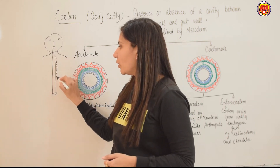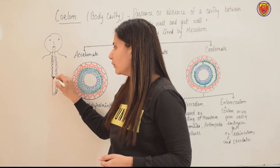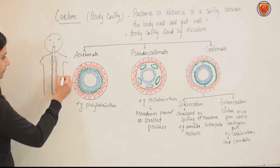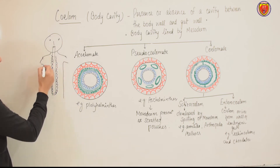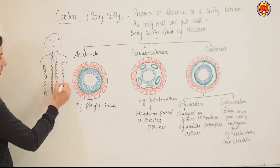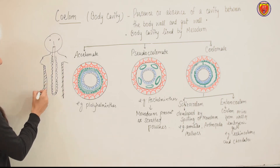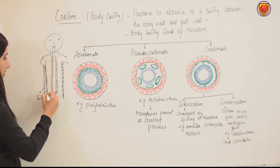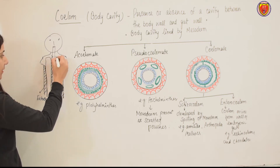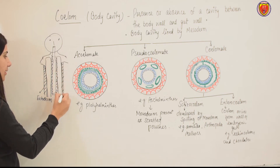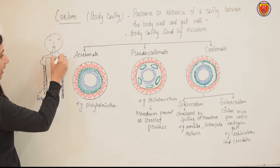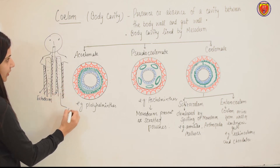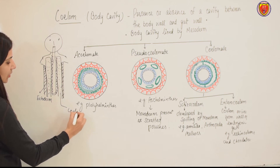Yahaan pe jo layer present hai — this one is a gut wall or endoderm. Iske baad yeh iski body hai — this one is a body wall, and it is made of ectoderm. Iske beech mein jo structure hai, jo mesoderm se lined hai — these are lined by mesoderm. This cavity. Yahaan pe bhi ek fluid filled hoti hai, aise khali nahi hai. This fluid-filled cavity is called a coelom or body cavity, and this fluid is called coelomic fluid.